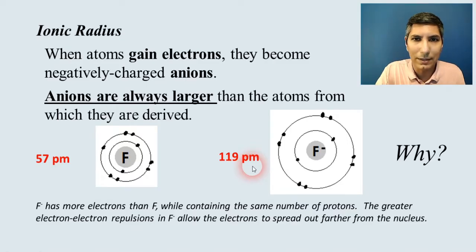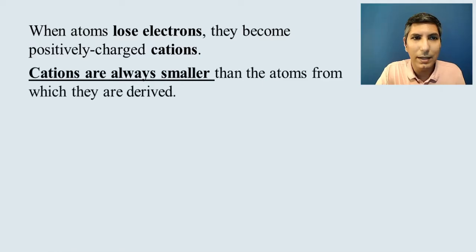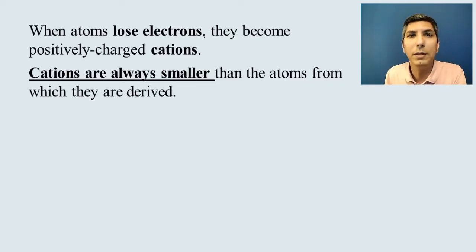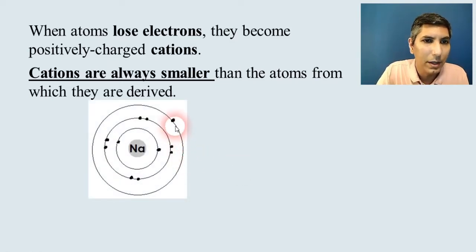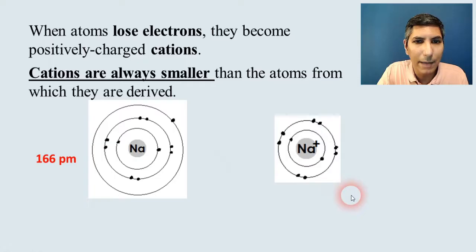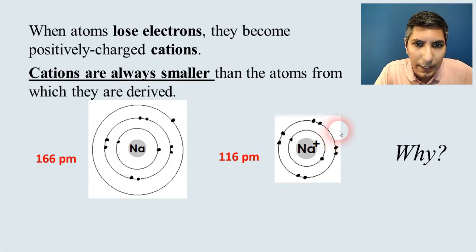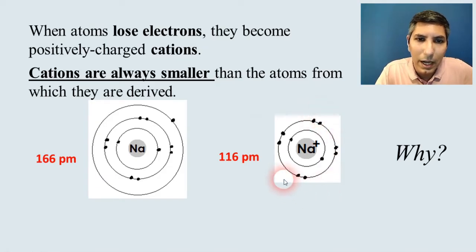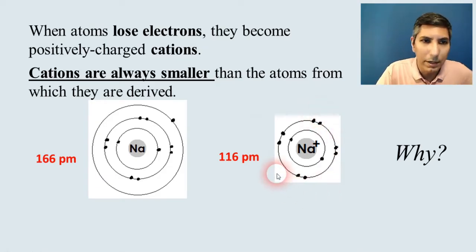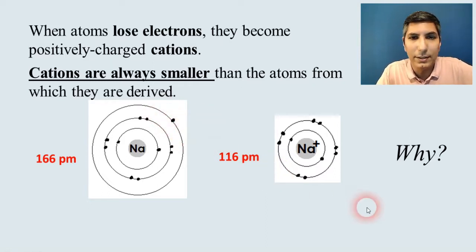What about positive ions — cations? Cations are the opposite: any time an atom loses electrons and becomes a cation, that cation is always smaller than the atom from which it was derived. Take sodium, which has 11 electrons. If you remove that last electron, it gets a whole lot smaller. You can see that we've lost an entire electron shell — that third occupied energy level is gone because it was the only electron in it.